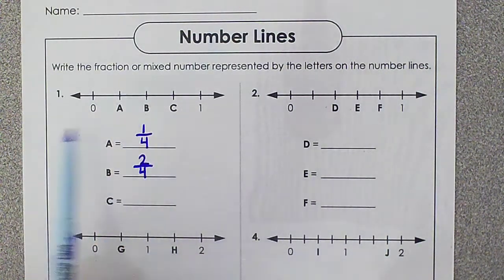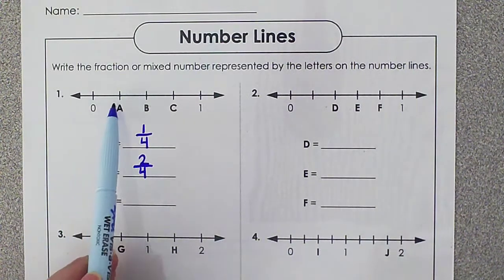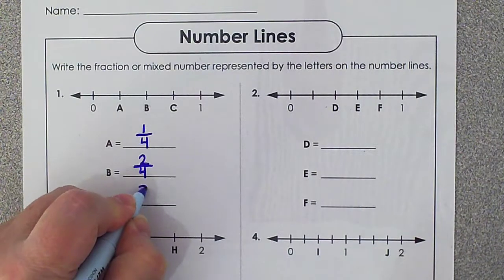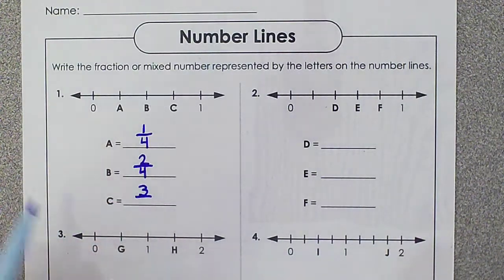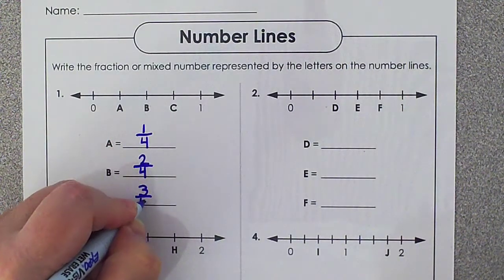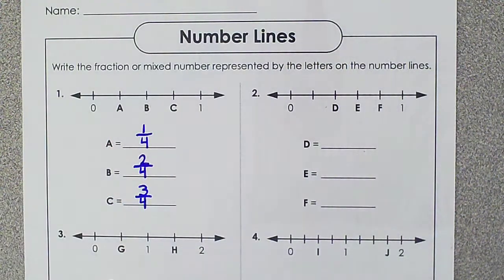For point C, point C is located 1, 2, 3 marks past my 0. But there are 1, 2, 3, 4 marks in the whole line. So my fraction for C is 3/4.